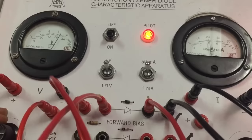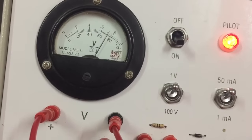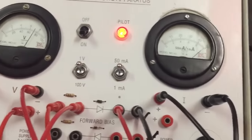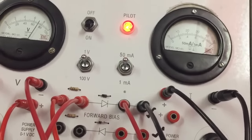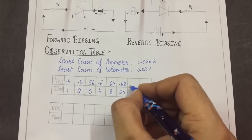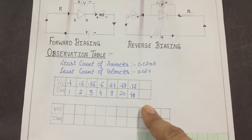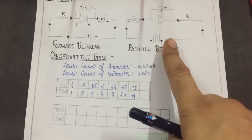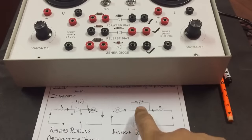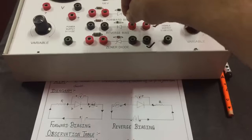At 0.64 volt the current reading is 8 milliampere, and this variation will keep increasing. At 0.68 volt, current has jumped to 20 milliampere. At 0.72 volt, the current value coming is 58 milliampere. If I increase the voltage even slightly, the current shoots beyond the meter range, so the maximum reading we can take is 0.72 volt and 48 milliampere. This completes our observation table for forward biasing.